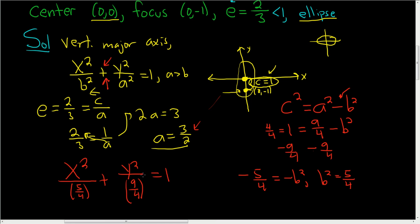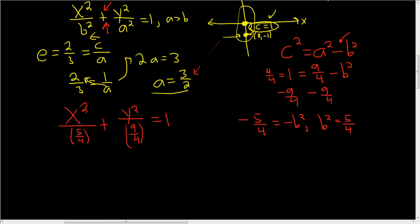And we should probably go ahead and clean this up. We're taking x squared, and we're dividing by 5 fourths. That's the same thing as multiplying by the reciprocal. So this is 4x squared over 5 plus 4y squared over 9. And that's equal to 1. And that's it.